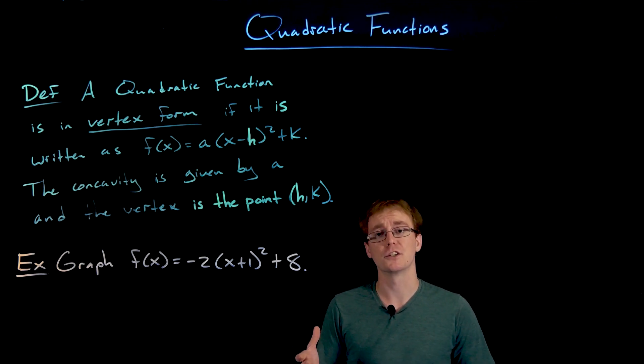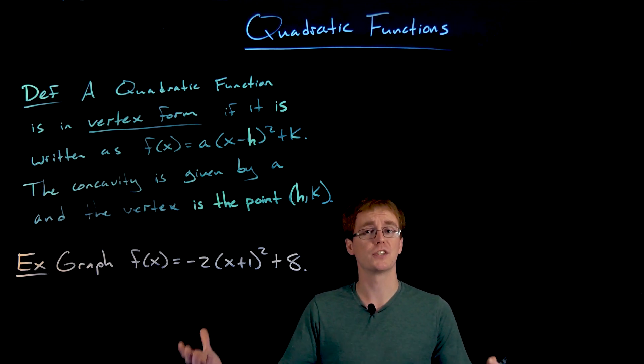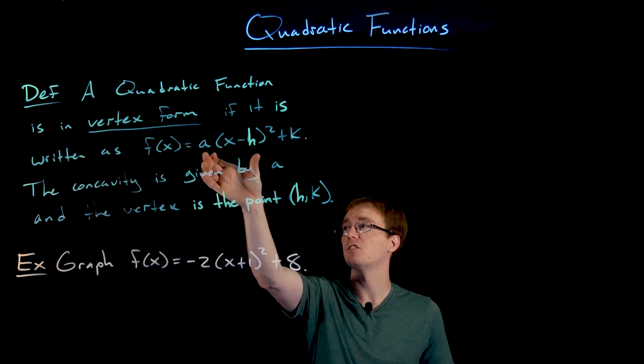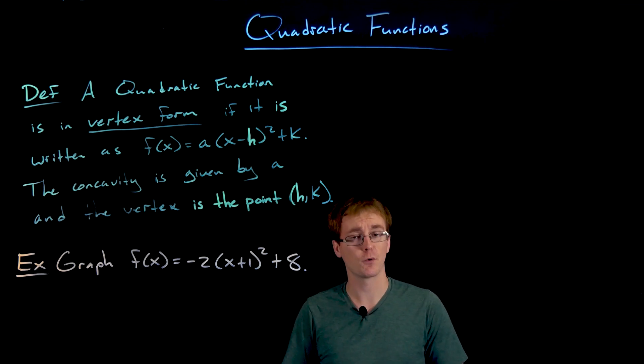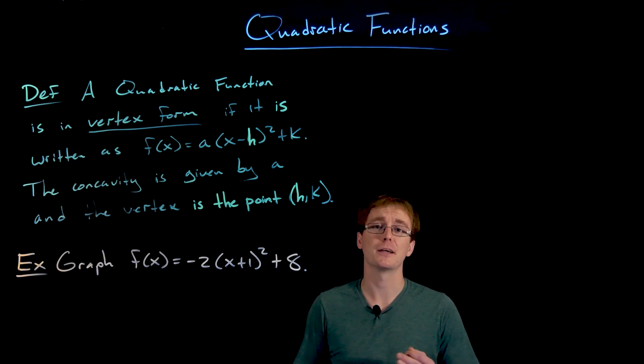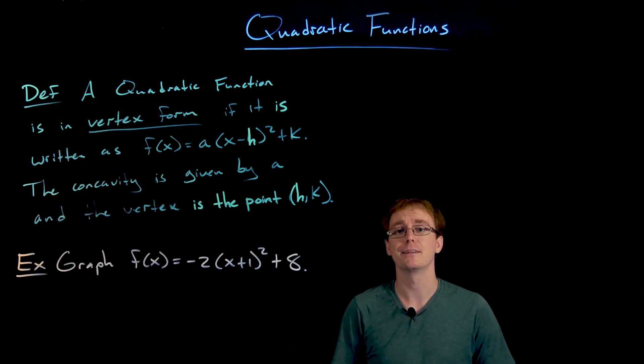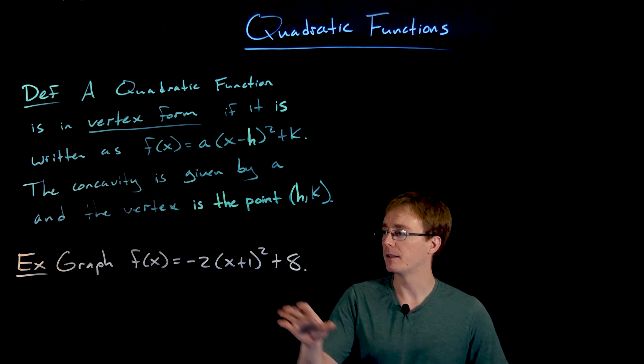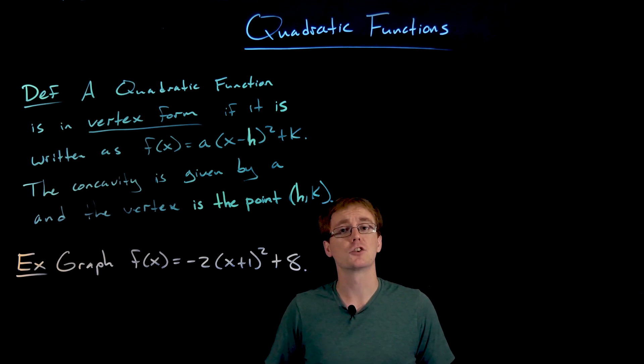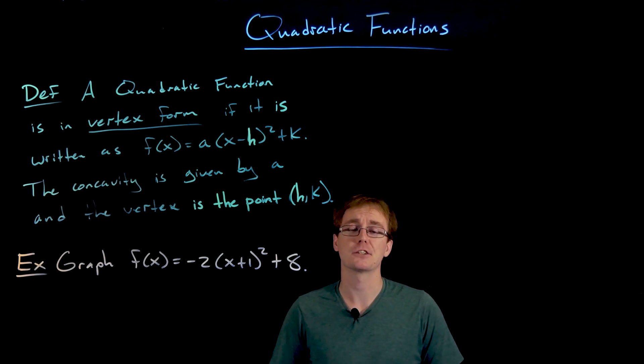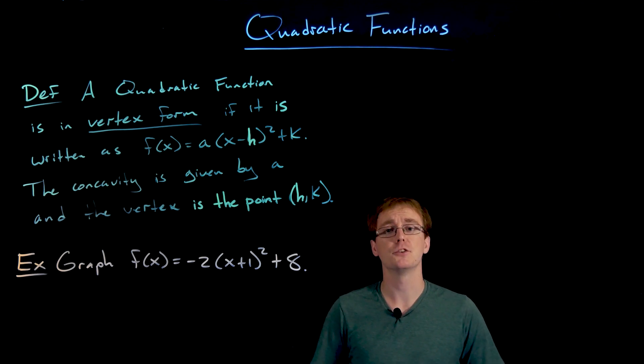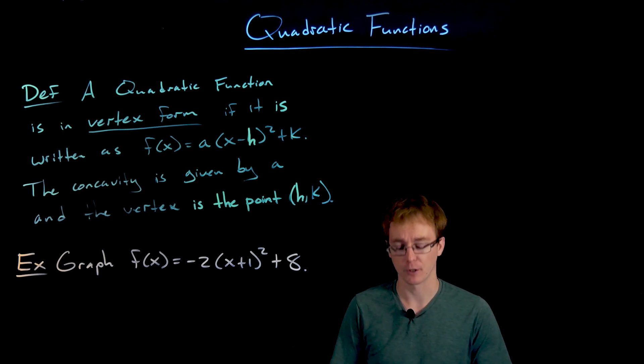If for some reason we wanted to go from our expanded or standard form and write a quadratic function in this vertex form, the way we go from standard form to vertex form is by using that process of completing the square. But in this example we already have the square completed, we are already in vertex form, so we can get right to trying to graph this quadratic function.